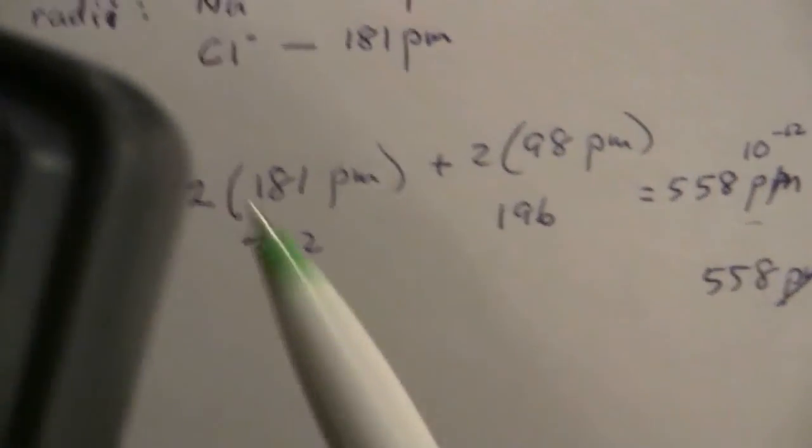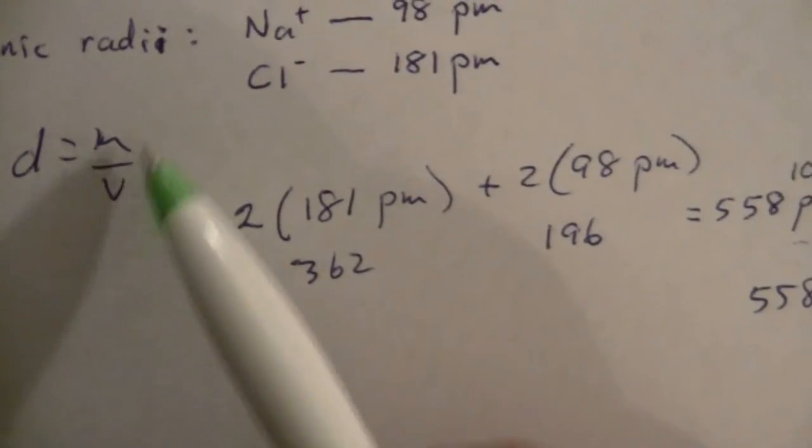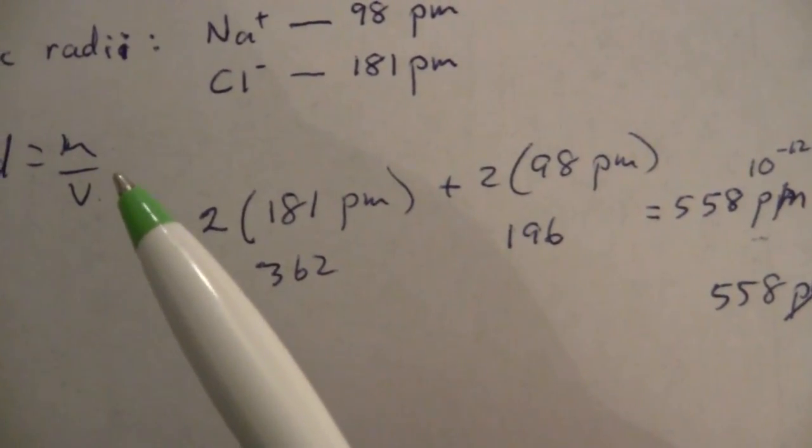So that's the volume part of our density here. Now we need the mass. So we need the mass.